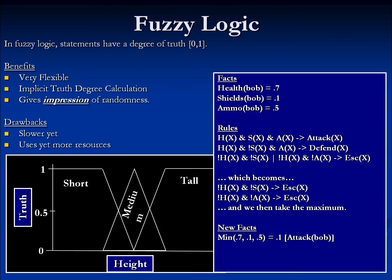To calculate Bob's attack tendency, we take the minimum of his health, shields, and ammo, because this is an AND statement. The minimum of 0.7, 0.1, and 0.5 is 0.1, so Bob's attack tendency is 0.1. Bob's defend tendency is a little trickier. First, we calculate the NOT value for shields: 1 minus 0.1 is 0.9. We then take the minimum of 0.7, 0.9, and 0.5, which is 0.5. So Bob's defend tendency is 0.5.